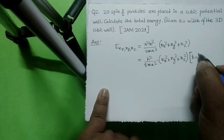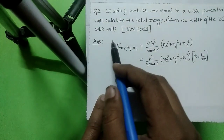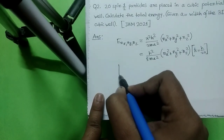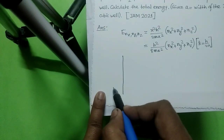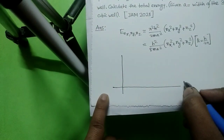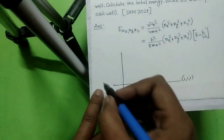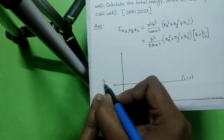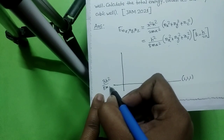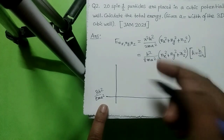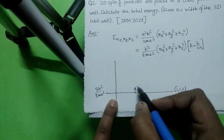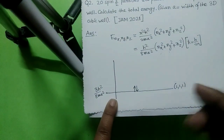Here, ℏ = h/2π. Now I will distribute the different particles into different energy states of this cubic well. For the ground state, nx = ny = nz = 1, and its energy is 3h²/8ma². Since each energy level contains two spin-half particles, this ground state energy level holds 2 particles.